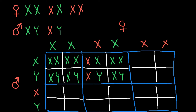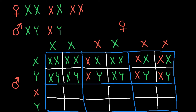Next is the mating of an affected female with a normal male. The affected female can only give a defective X chromosome to her progeny, while the male gives either a normal X chromosome or a normal Y chromosome. As you can see, 50% of the progeny are males and 50% are females.